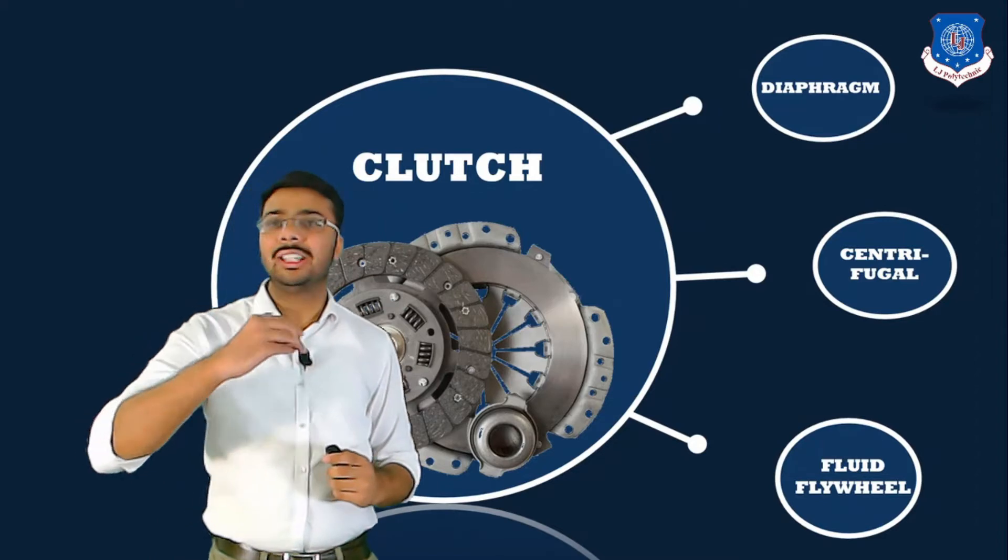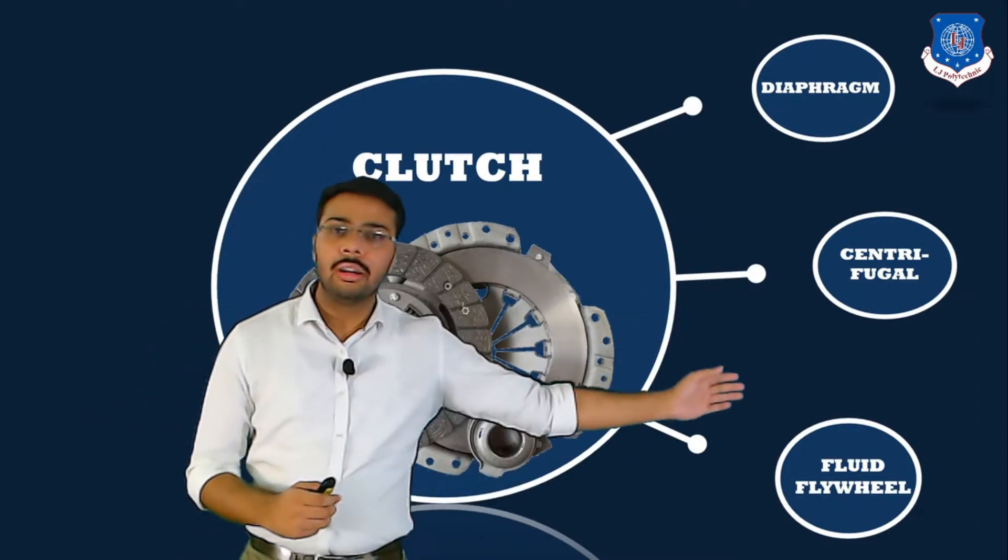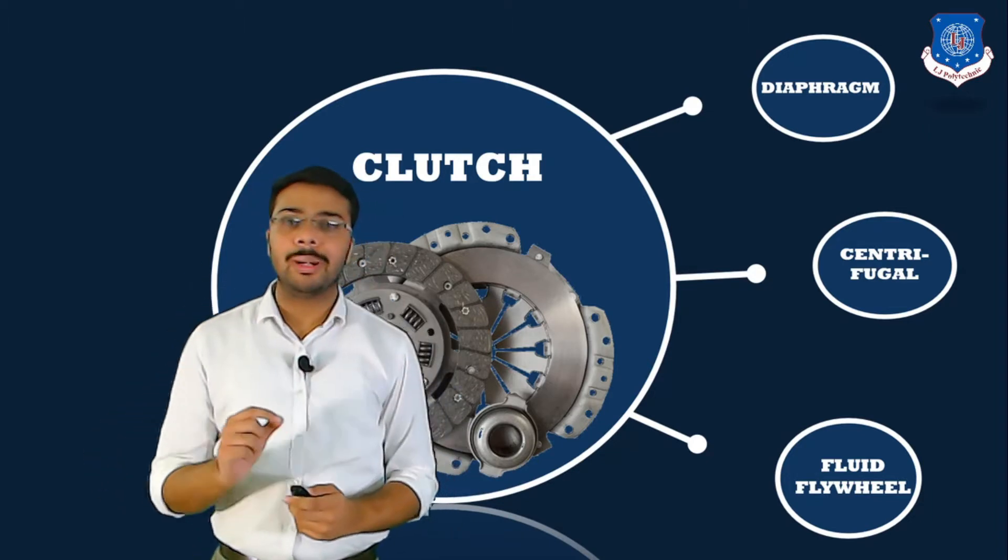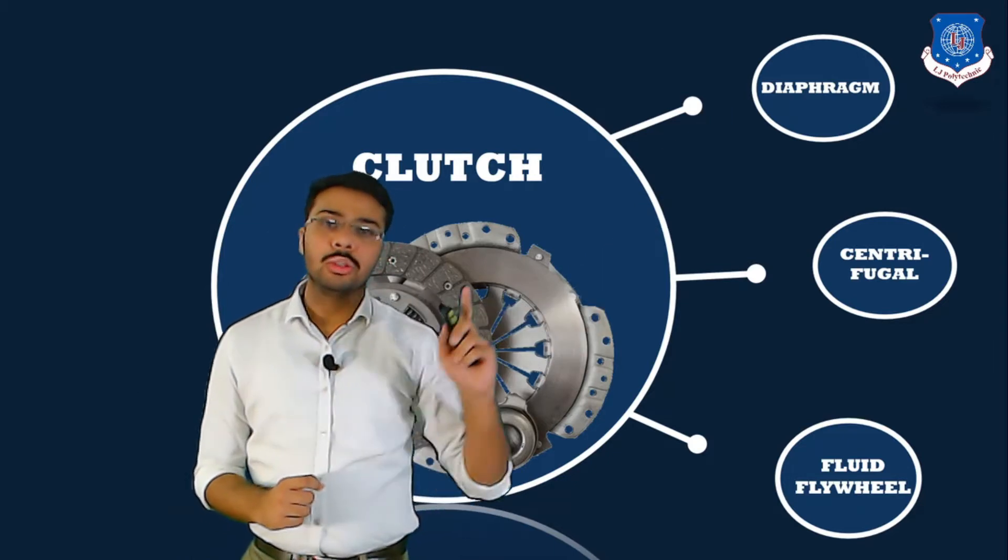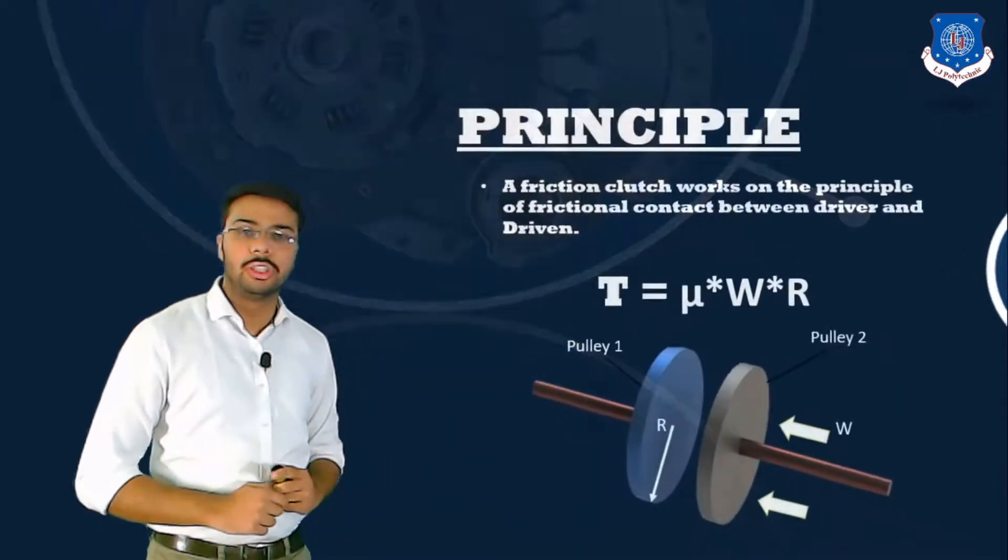Now the clutch consists of various types like diaphragm type clutch, centrifugal clutch, and fluid flywheel. But one of the most used types of manual clutch in modern vehicles is the diaphragm type clutch. Today we are going to see that, but before we go into that, let us first understand the principle of clutch.